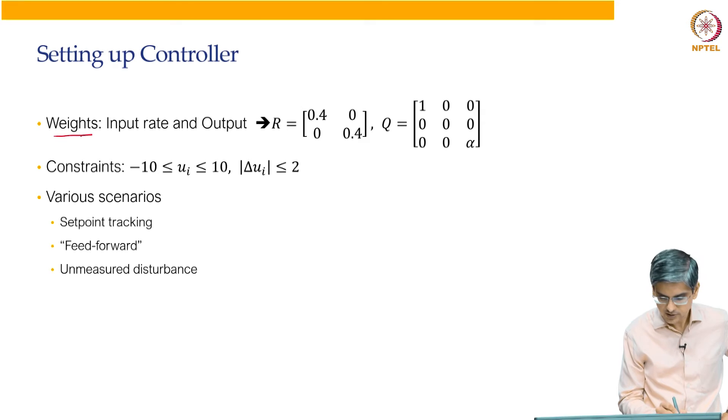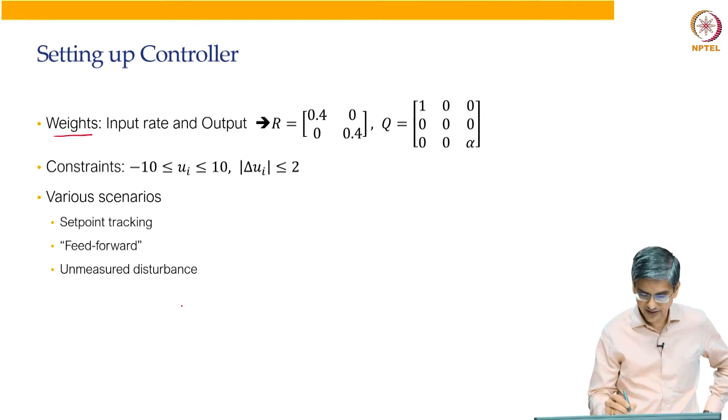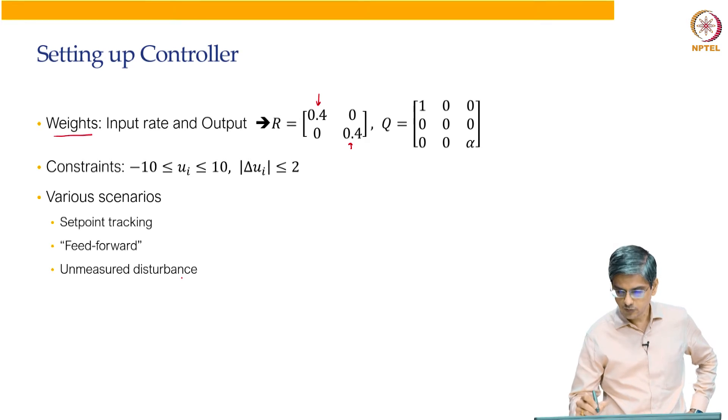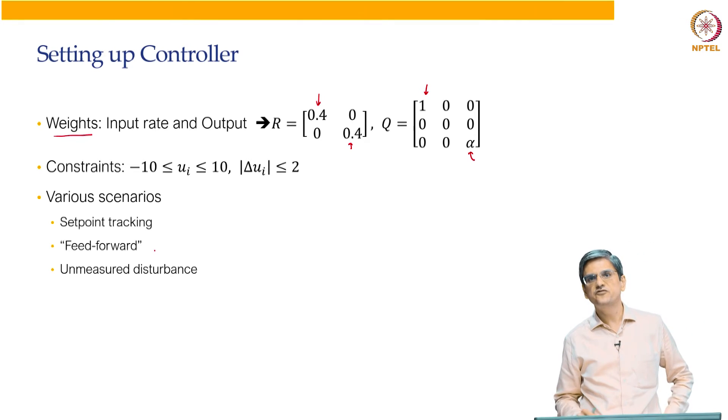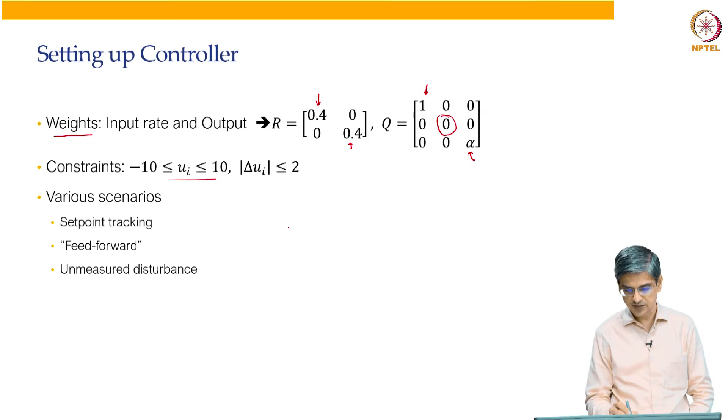So the weights, the input and output weights. There are no input weights, of course there are input rate weights and the input rate weights is 0.4 and 0.4 for the two inputs. The output weights is 1 and 1 for H2 and N2. The outputs from the first tank, they are not controlled as you can see that the weight is 0. So that is allowed to move freely. The constraints that are there is that the input should be between minus 10 and plus 10 and the input rate should vary between minus 2 and plus 2.